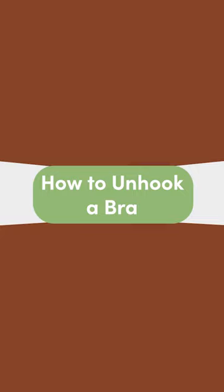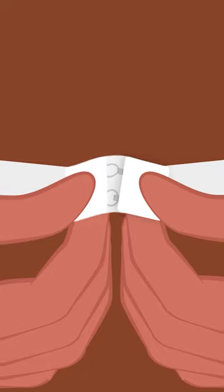To unhook a bra with a backstrap, first find the clasps on the back. Place one hand on the left side of the hooks and the other hand on the right side. Gently pull both sides of the strap together to create a bit of slack.